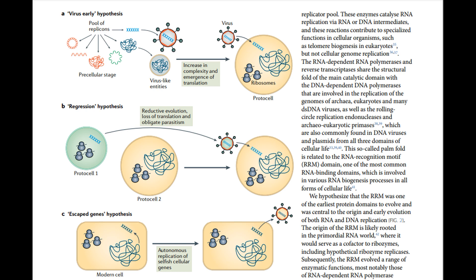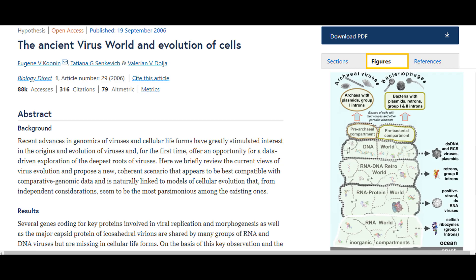There are three traditional hypotheses proposed to explain the origin of viruses. The virus early hypothesis holds that viruses evolved from replicons that existed before the formation of cellular life. In the regression hypothesis, viruses formed from cells or protocells that lost much of their cellular machinery over time. And third, the escaped gene hypothesis proposes that genes of celled organisms acquired the ability to replicate independently and spread. The solution might be a combination of some of the above — some viruses have escaped from cells, while others predate them.